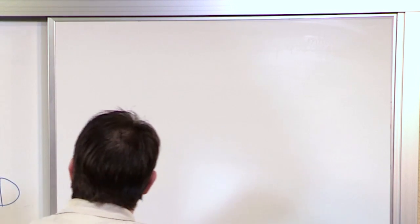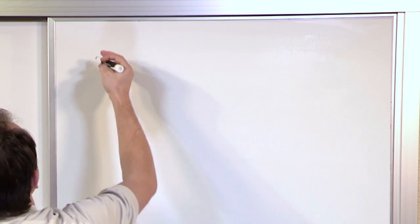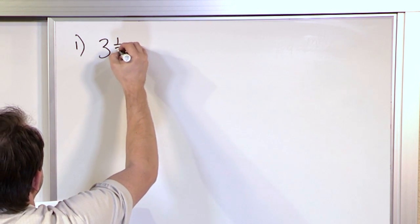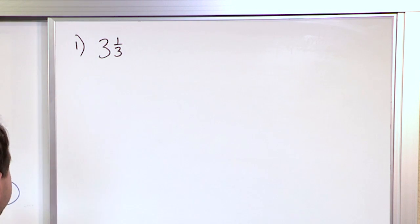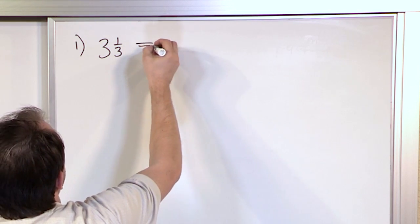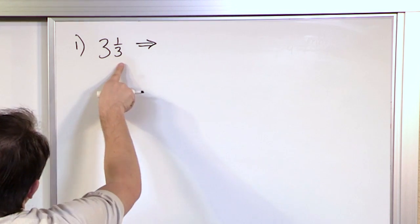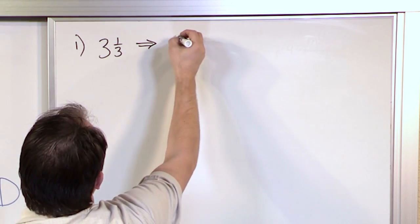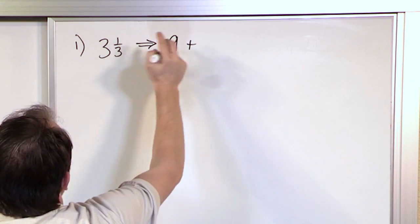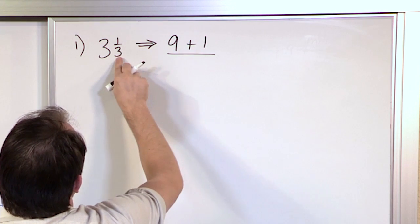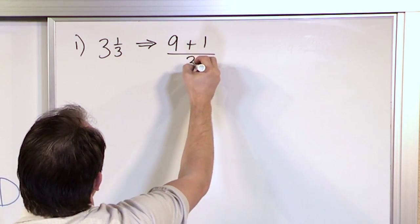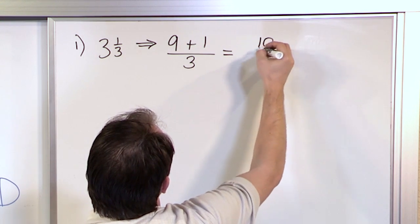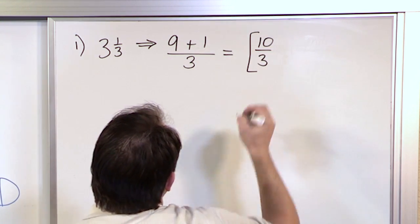Let's get a little bit of practice converting between mixed fractions and improper fractions. If I have three and a third, you take the bottom three, multiply it by the big number — that gives me nine — plus the number on the top, which is one. The denominator three just stays the same. Nine plus one is 10, so we have 10 thirds. That is the answer.